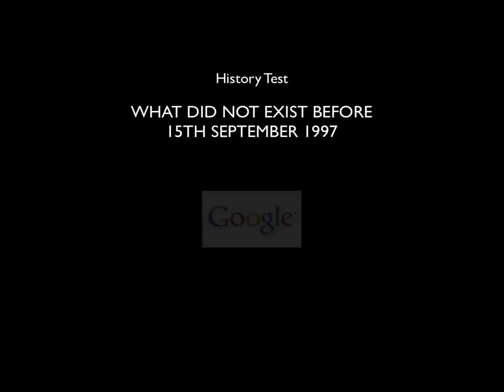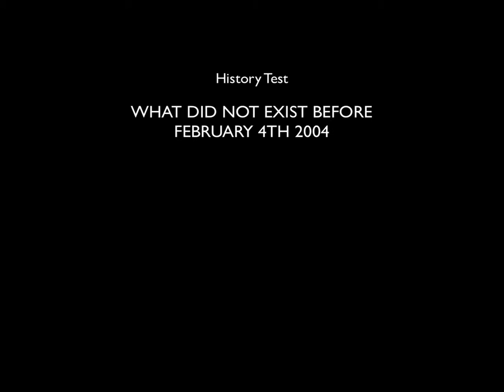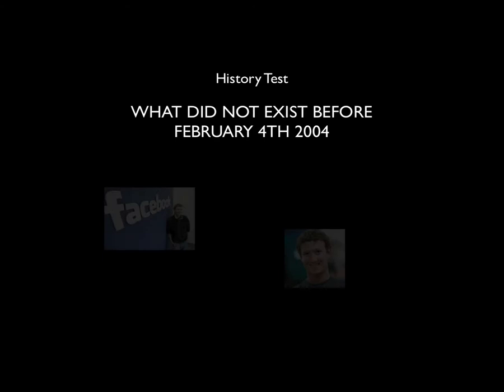Moving forward once more — 15th of September 1997, what did not exist before that date? Something we all use: Google. Search engines came into existence, and Google being possibly one of the most important things that is out there for any of us in the world now is well under 20 years old. And it gets even more amazing when you look at things that came along only after February 2004 — and that was Facebook. Facebook is less than 10 years old, and everybody knows some billion people around the world use that.